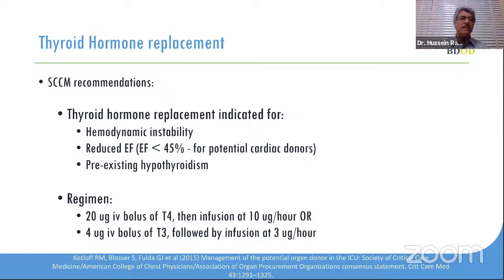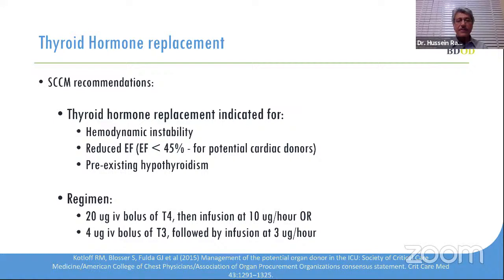The Society for Critical Care has made a recommendation that thyroid hormone replacement is indicated in certain situations — certainly if there is hemodynamic instability, as there is some evidence it could stabilize patients and decrease vasopressor requirements. Also, if there is a reduced ejection fraction below 45%, as there is some benefit in improving ejection fraction. Donors with known hypothyroidism should continue to receive thyroxin. The regimen is 20 micrograms IV bolus of T4 followed by infusion of 10 micrograms per hour.